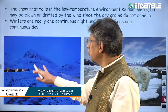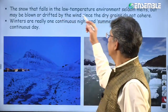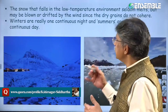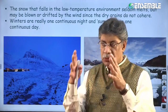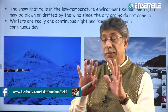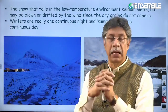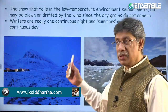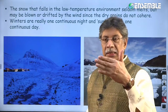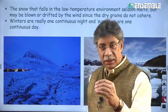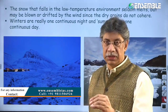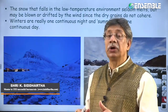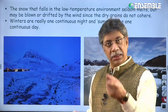Snow that falls in a low-temperature environment seldom melts but can be blown or drifted by wind, since the dry grains do not cohere. The snow cover doesn't get compacted into ice — snow is loose while ice is compacted. The snow remains in a powdery form. This can be the basis for an exam question: consider the statement that snow in polar areas gets compacted and converts itself into ice — this third statement would be incorrect.